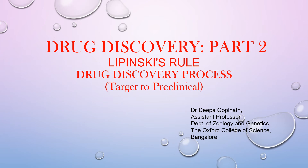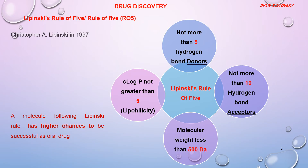Hello students. Today's topic is the Lipinski rule and certain steps in drug discovery. The Lipinski rule of five was originally conceived for the formulation or development of orally bioavailable drugs. It was proposed by Christopher Lipinski in 1997. It is a set of guidelines to determine the drug-ability of a molecule.